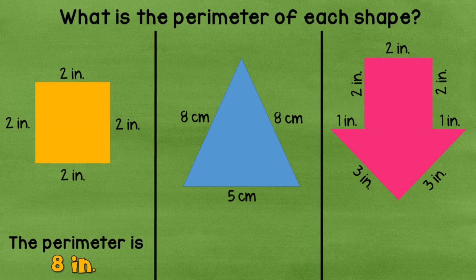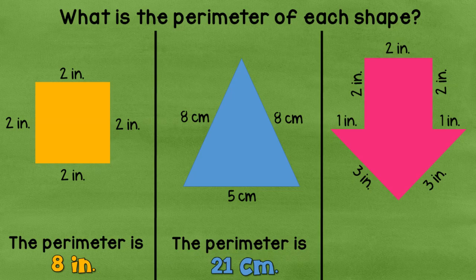Let's take a look at the blue triangle. We have sides of eight, eight, and five. So we would say eight plus eight is sixteen. And sixteen plus five is twenty-one centimeters.